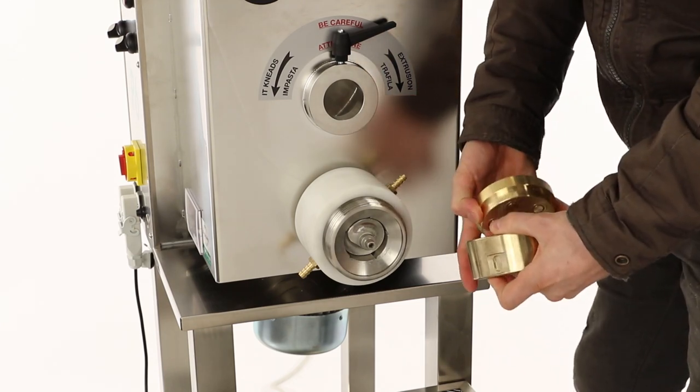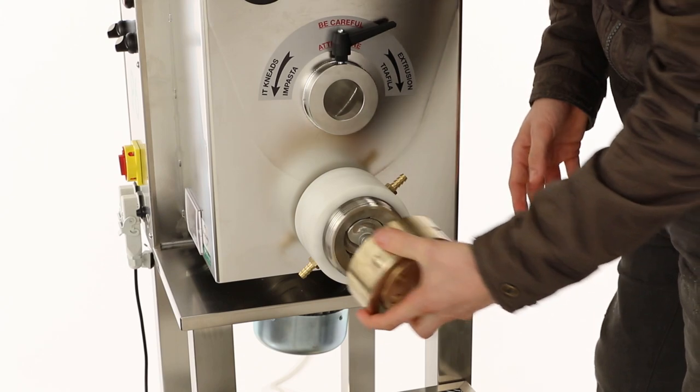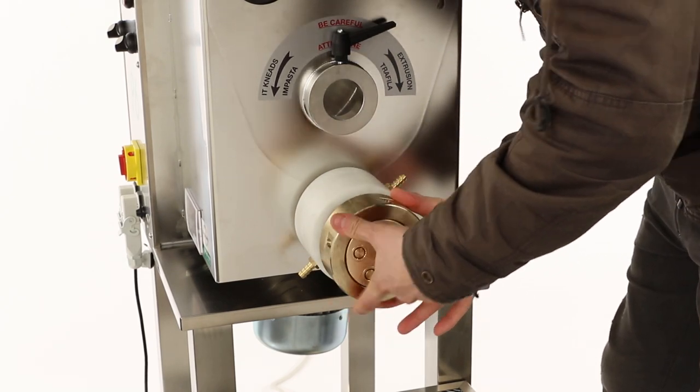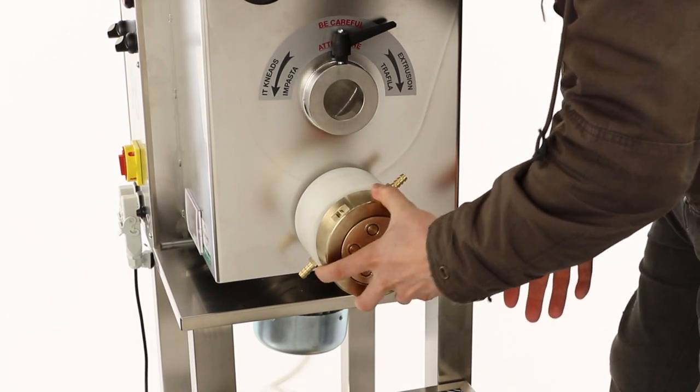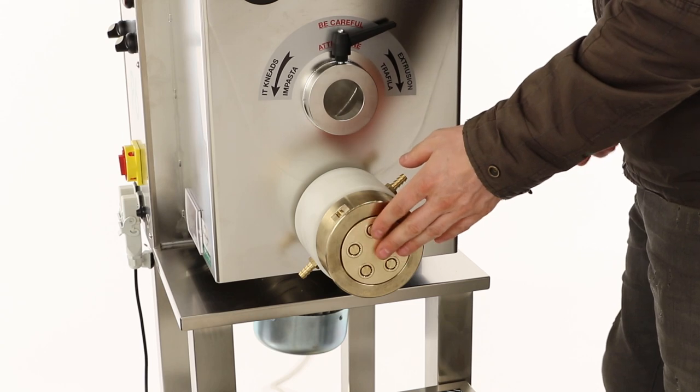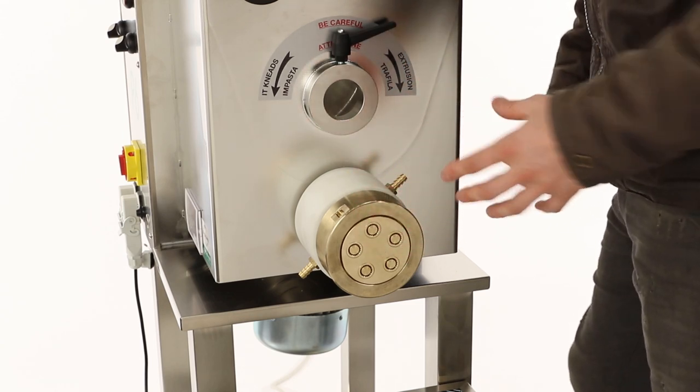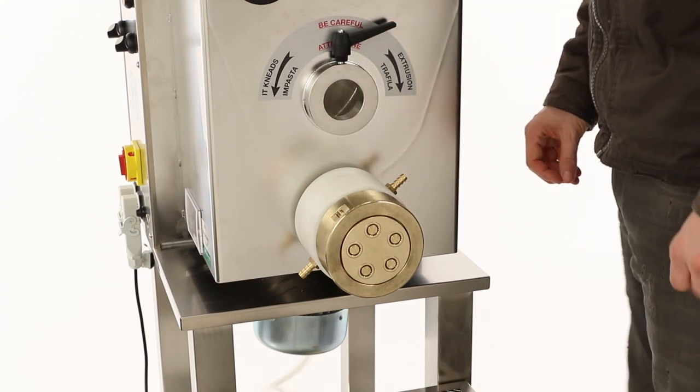The die gets inserted into the die sleeve as so, and then gets just screwed on by hand. Don't use the wrench all the way. Now I recommend installing a die that you're not actually going to be using. Those dies that you will be using should be soaking in warm water and warming up, getting ready for your batch.